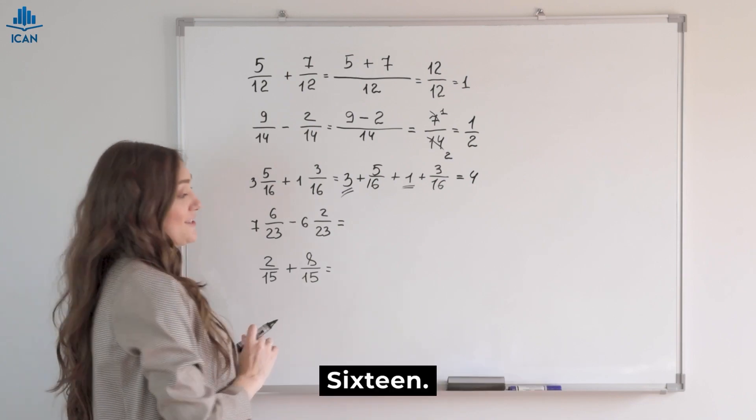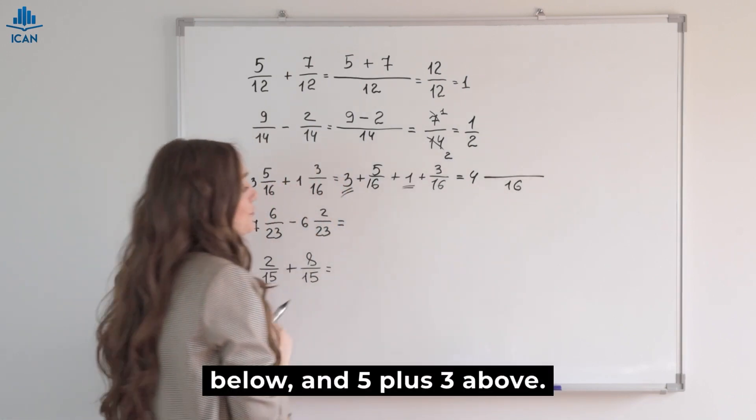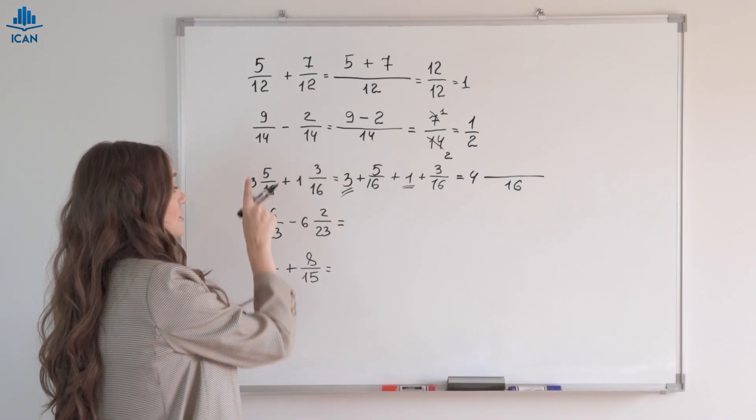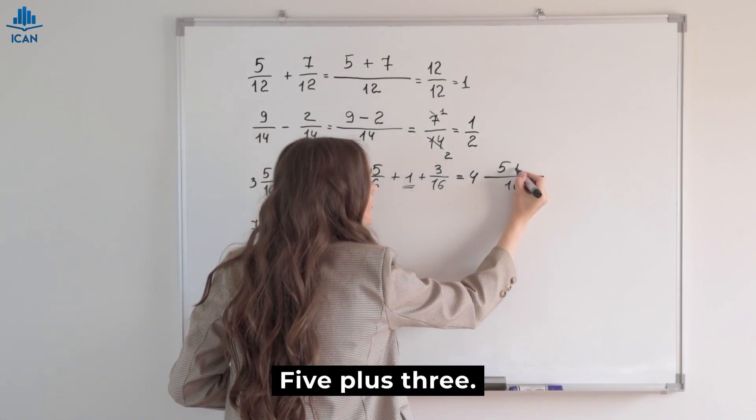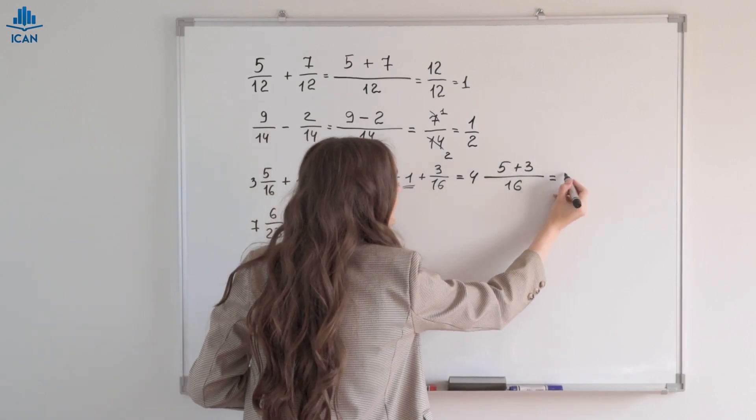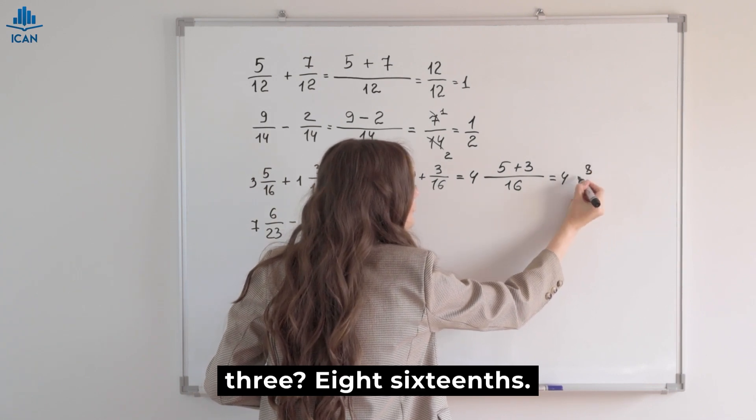And now we have a fraction. What's our denominator? 16. Draw a long line. Write 16 below and 5 plus 3 above. 5 plus 3. What's 5 plus 3? 8 sixteenths.